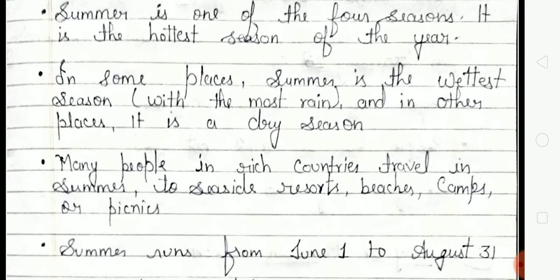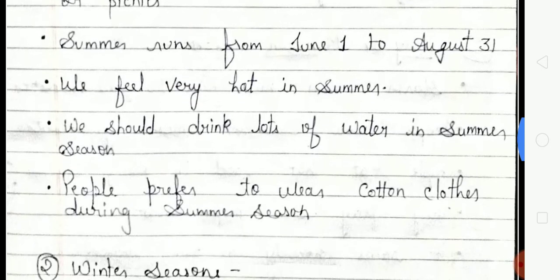Many people in rich countries travel in summer to seaside resorts, beaches, camps, or picnics. Summer runs from June 1st to August 31st. We feel very hot in summer and should drink lots of water. People prefer to wear cotton clothes during summer season because cotton clothes keep us cool.